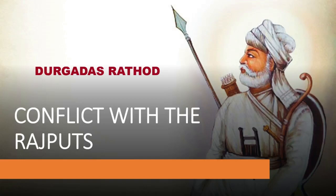Conflict with the Rajputs: Akbar had secured the cooperation of the Rajputs with his policy of amicable relations. Aurangzeb could not obtain the cooperation of the Rajputs. After the death of Rana Jaswant Singh of Marwar, Aurangzeb annexed his kingdom to the Mughal Empire. Durgadas Rathod crowned Jaswant Singh's minor son Ajit Singh as the king of Marwar. Durgadas Rathod fought hard against the Mughals. Aurangzeb sent Prince Akbar to Marwar to crush the resistance of Durgadas. Prince Akbar joined hands with the Rajputs and rose in revolt against Aurangzeb, and efforts were made to seek help from the Marathas in Maharashtra. In this revolt, Durgadas Rathod continued the struggle against the Mughals for the existence of Marwar.